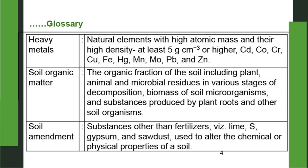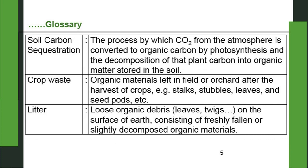Soil amendment: substances other than fertilizers — for example lime, sulfur, gypsum and sawdust — used to alter the chemical or physical properties of soil. Soil carbon sequestration: the process by which carbon dioxide from the atmosphere is converted to organic carbon by photosynthesis, and the decomposition of that plant carbon into organic matter stored in the soil — mostly stored in the form of humus.